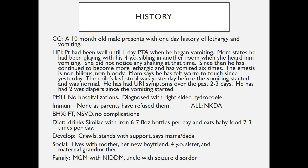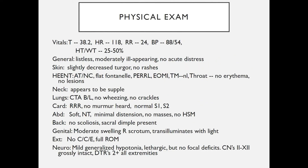He crawls and stands with support and says mama and dada. Socially he lives with the mother, her new boyfriend, a four-year-old sister, and the maternal grandmother. Family history includes a maternal grandmother with non-insulin-dependent diabetes and an uncle with seizure disorder. On physical exam, vital signs include a temperature of 38.2, a heart rate of 118, a respiratory rate of 24, and a blood pressure of 88 over 54.